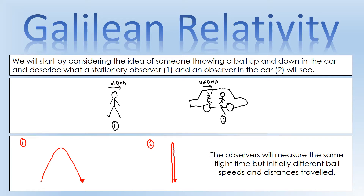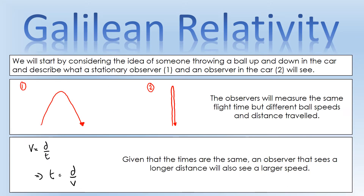They would then be able to calculate how far the ball actually went and how fast it actually traveled. But initially they would see different distances and different speeds. Given that the times are the same, the person who measures the shorter distance is going to see a smaller speed, while the person who sees it travel the longest distance is going to measure a larger speed — although they will be able to figure out what each other saw.